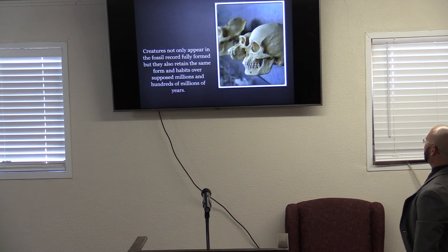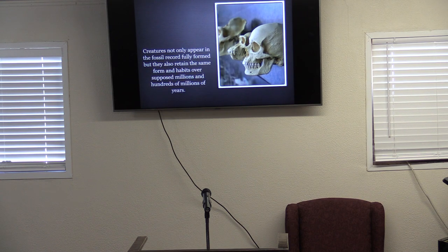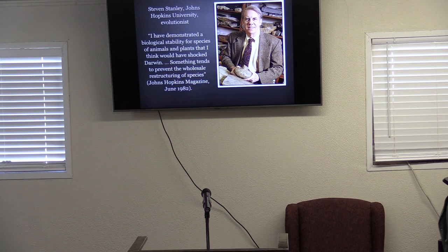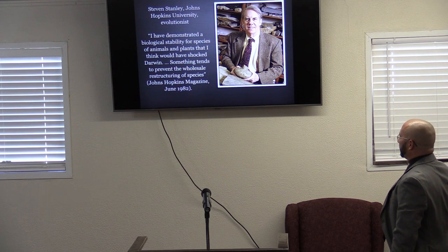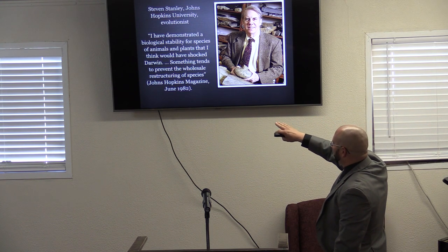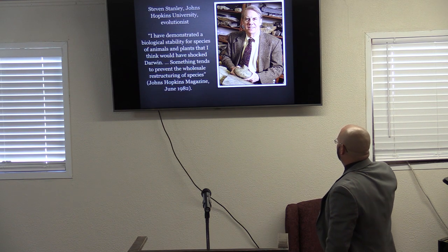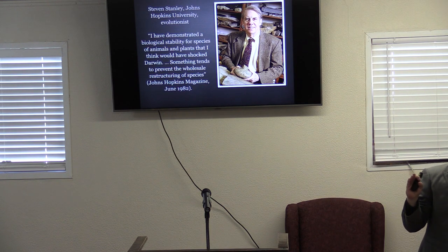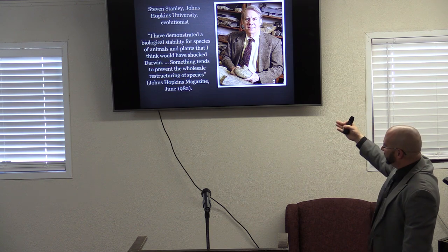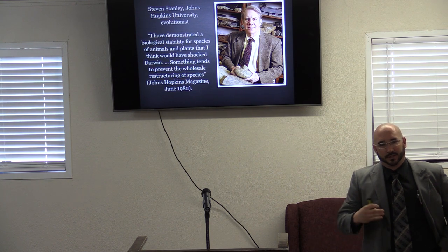The fossil record exhibits stability or stasis. Creatures not only appear fully formed but retain the same form and habits over supposed millions and hundreds of millions of years. Steven Stanley of Johns Hopkins University, an evolutionist, said: 'I have demonstrated a biological stability for species of animals and plants that I think would have shocked Darwin. Something tends to prevent the wholesale restructuring of species.' What keeps people believing in evolution when their own observations say the exact opposite?